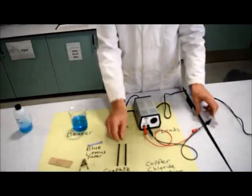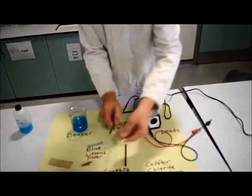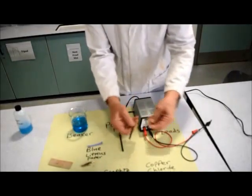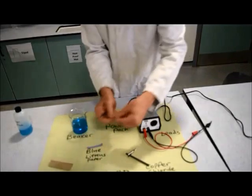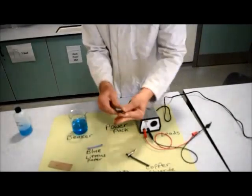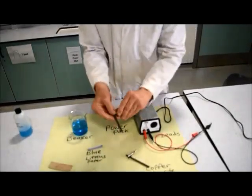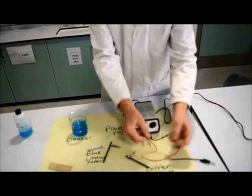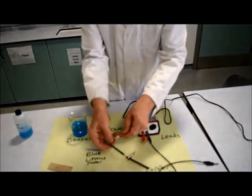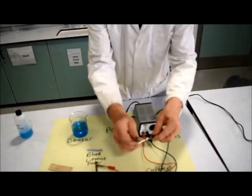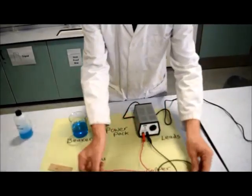Then we connect the electrodes to the crocodile clips like this—one clip there and one clip here—and then these go to the leads like so. There's a black lead and a red lead.